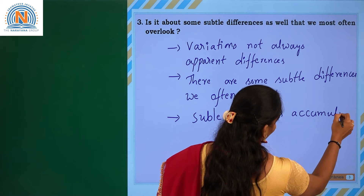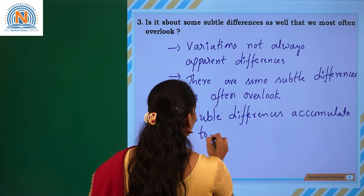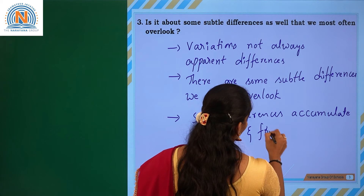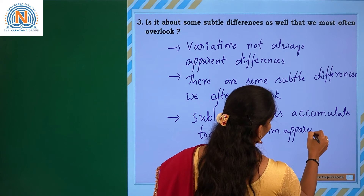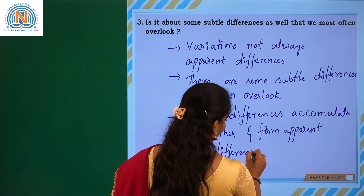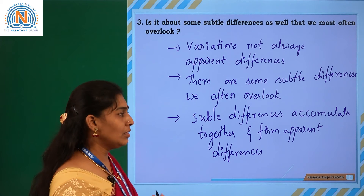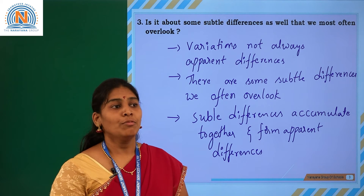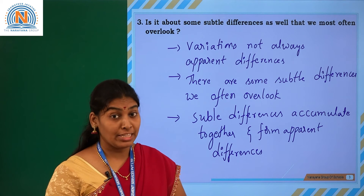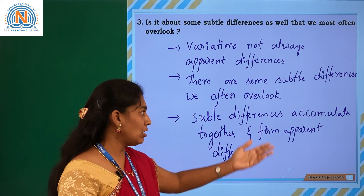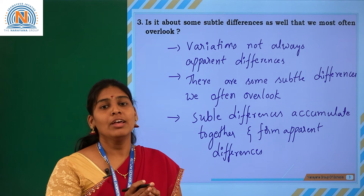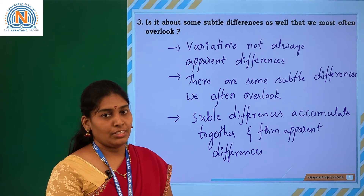Subtle differences accumulate together and form apparent differences. Sometimes we may not identify those changes, so we may often overlook them. All these subtle differences accumulate together and form the apparent differences in the organisms.